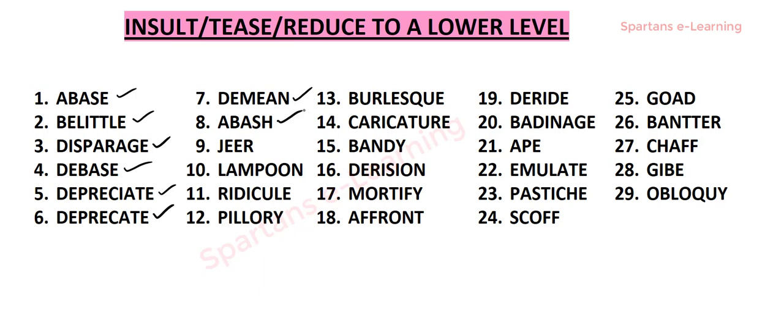Our next word is jeer. Jeer means to laugh at someone or to shout unkind things at them in a way that shows you do not respect them. Example: 'You know I am right,' she jeered. Second example: the president was booed and jeered by a crowd of protesters. Third example: fans jeered at the referee. So 'jeered at' is the proper usage — jeer means to mock someone.